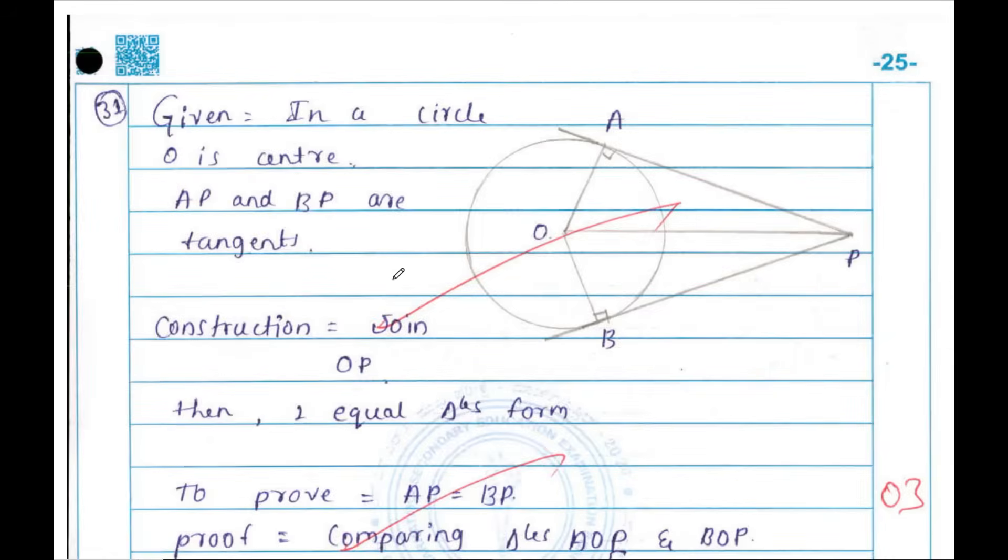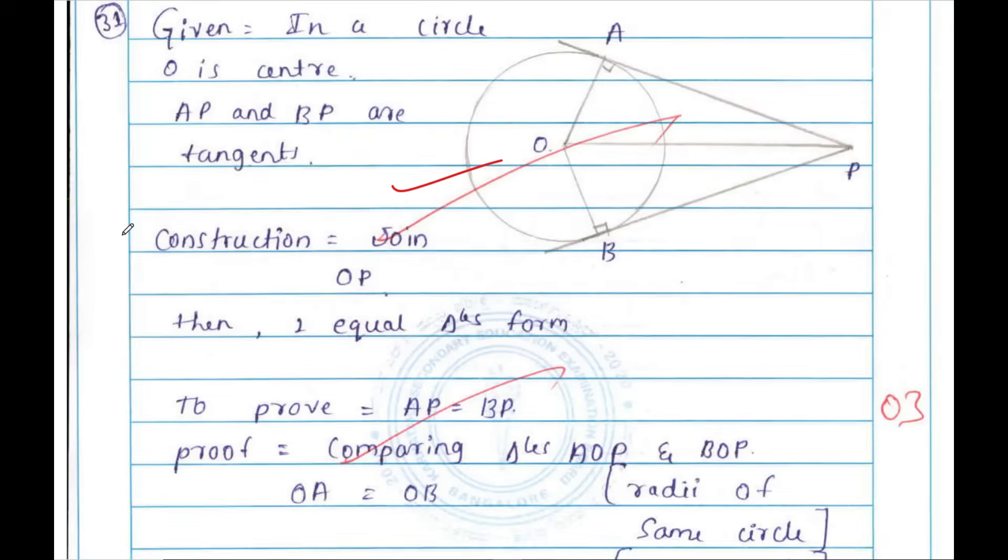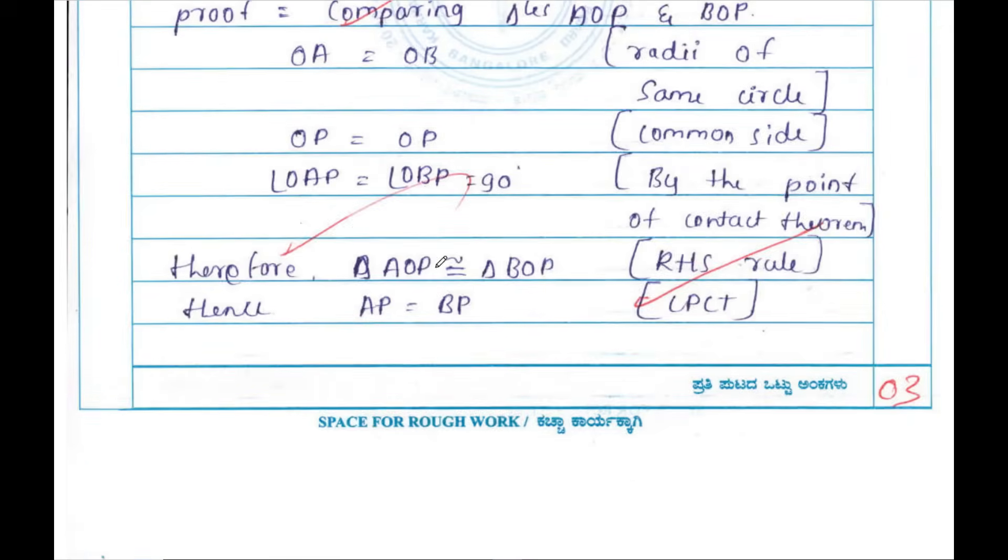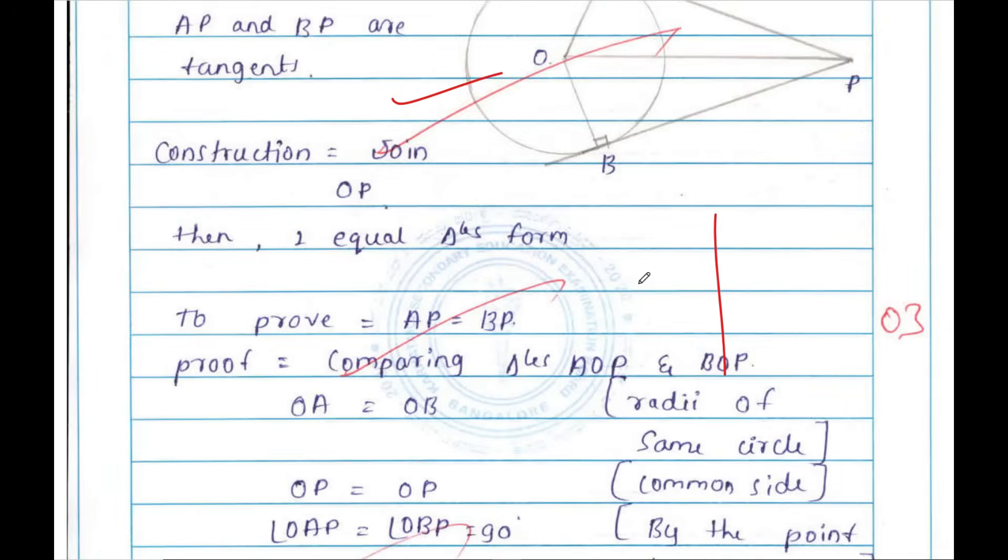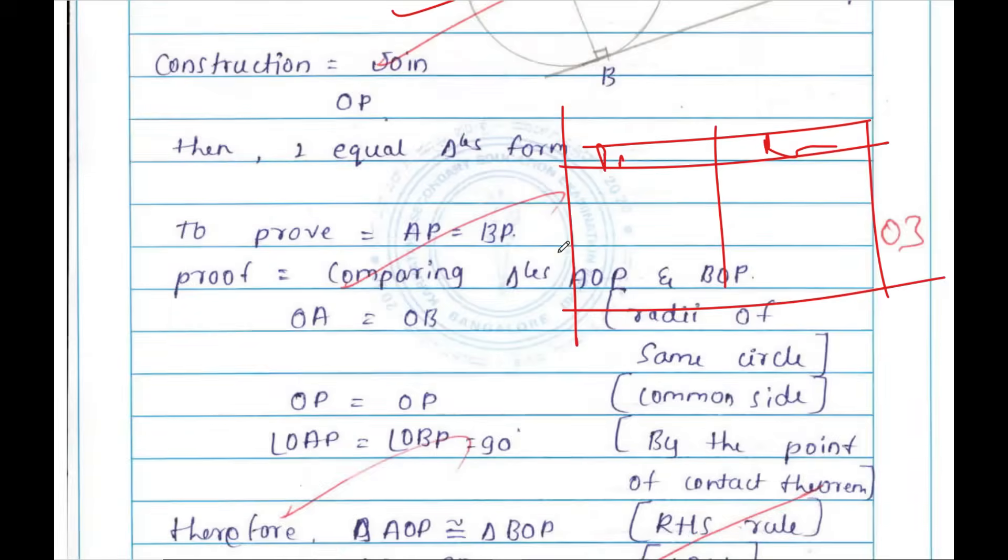For theorem, try to rewrite the figure first, then the given data, the proof. Try to write the proof part in two columns - that is statement and reason.